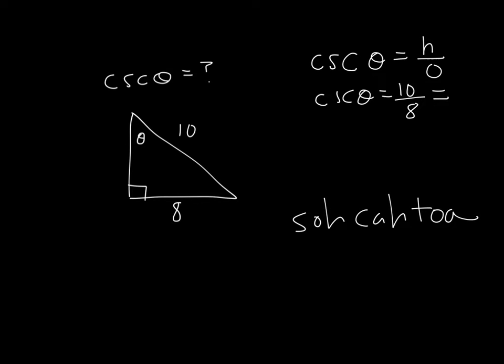So cosecant theta is 10 over 8, and you know we should reduce that fraction to 5 fourths. That's it. That's just a warm-up one, really not finding anything. We're just proving that we know what cosecant is: hypotenuse over opposite.